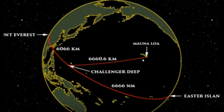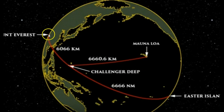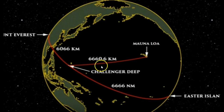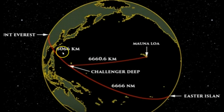The tallest mountain measured from the ocean floor on this planet is Mauna Loa. The deepest spot in the ocean is Challenger Deep, and the tallest mountain above sea level is Everest. From Easter Island to Mount Everest: 6,666 nautical miles. From Mauna Loa to Challenger Deep: 6,660.6 kilometers. From Challenger Deep to Mount Everest: 6,066 kilometers. This repetitive number is repeated over and over again, embedded right there in the distances — in different measurements: nautical miles, miles, kilometers.